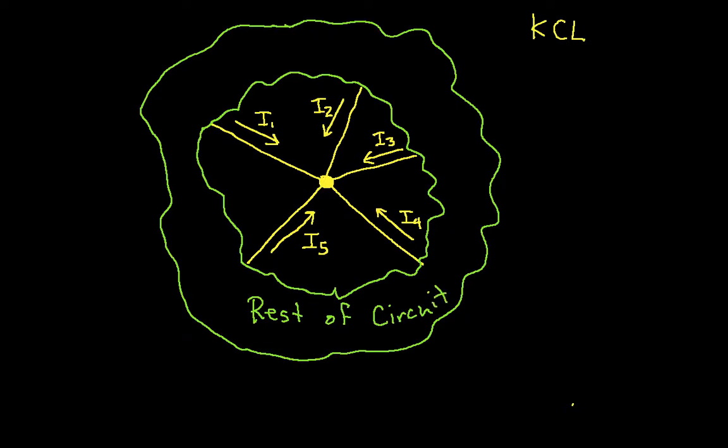For Kirchhoff's Current Law, we don't even care what the rest of the circuit is. In order to state it, basically, the way it would work for this particular picture, one way of stating it is I1 plus I2 plus I3 plus I4 plus I5 is equal to zero.